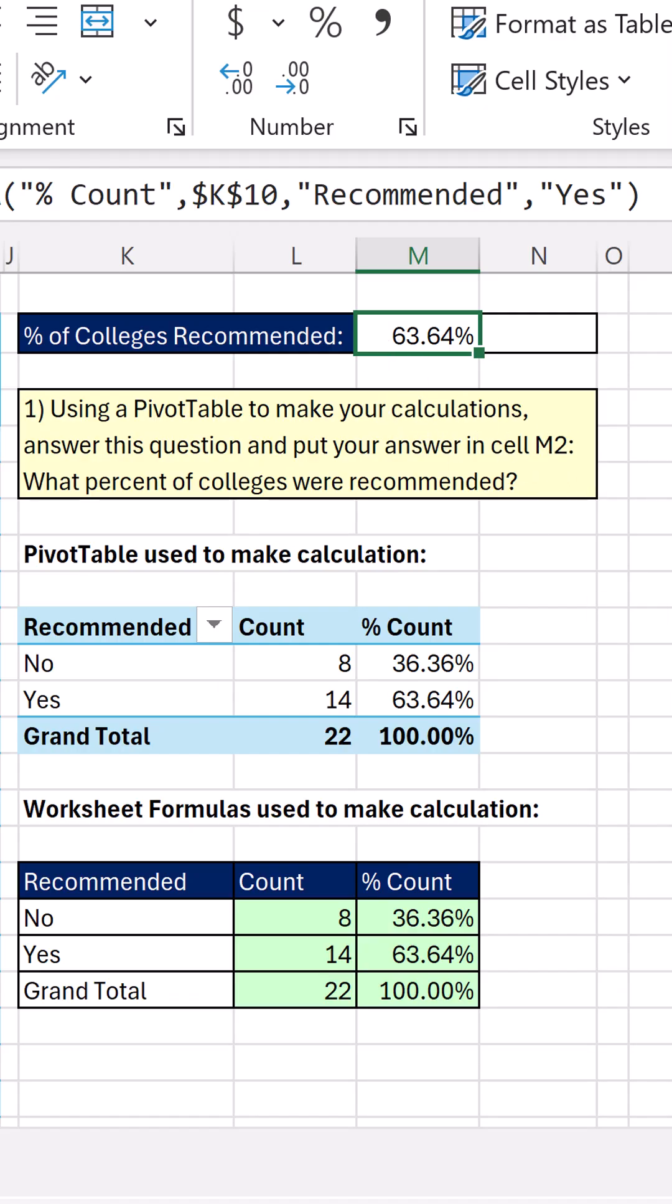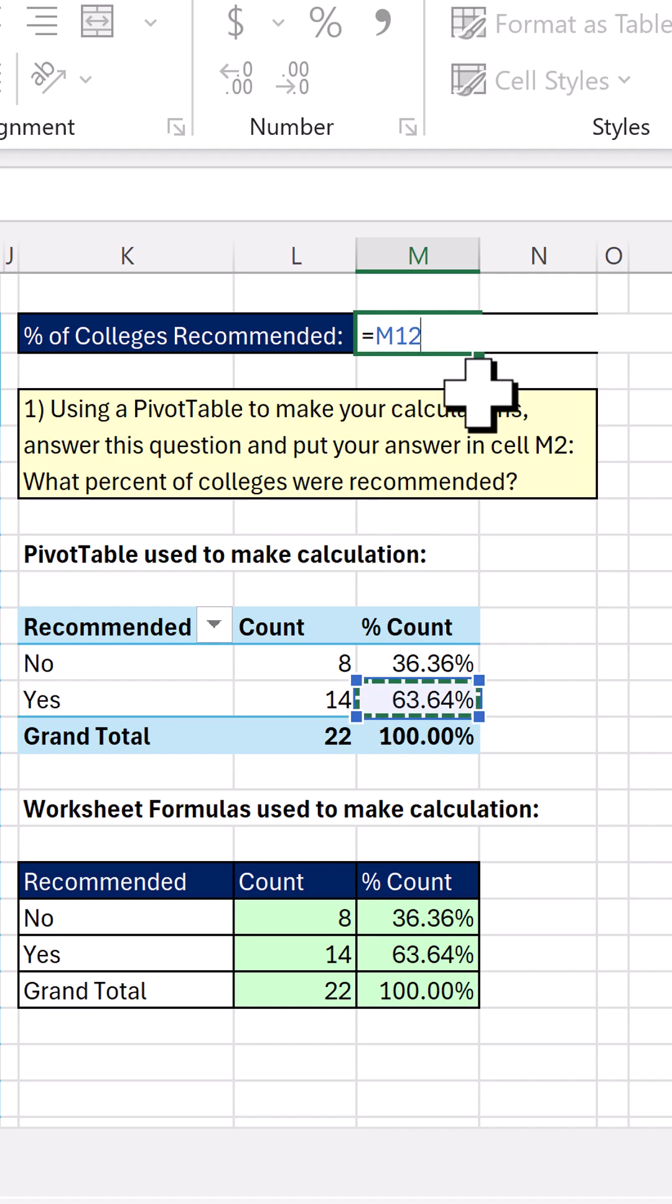Now, when I click on the cell where I want to put my answer, equal sign, click. That's beautiful. Just M12 and Enter.